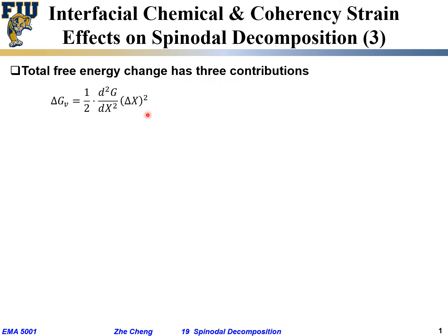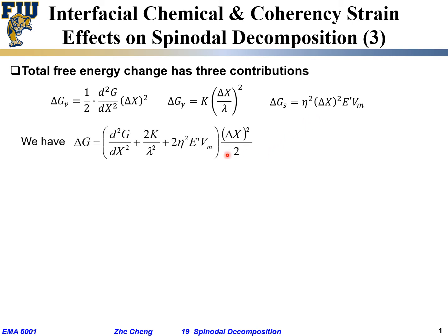Previously we talked about the geometric effect and mismatch effect. We said the total free energy change in reality would have three contributions: the first term due to the volume free energy between the uniform phase and the compositionally fluctuated two related phases; the second term due to the chemical mismatch at the interface; and the third term due to the coherency difference or the slight geometric mismatch. The total free energy change is the summation of these three contributions: the volume free energy term, the chemical term, and the geometric or coherency strain mismatch term.